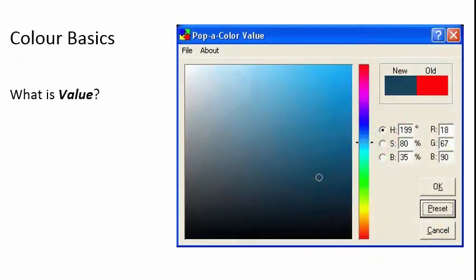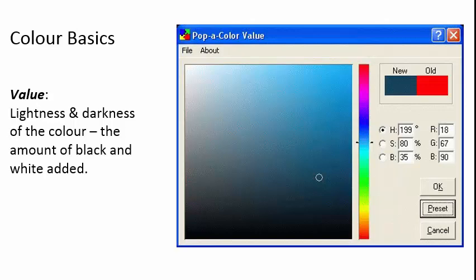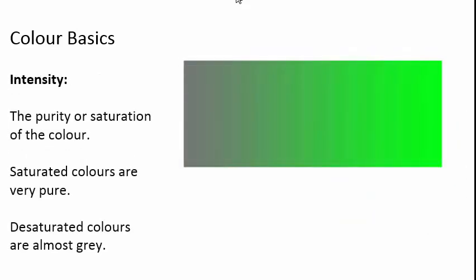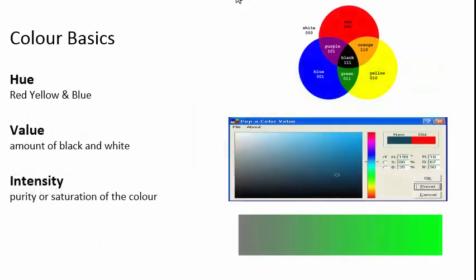Value is about the lightness and darkness of the color — the amount of black and white that we've added to it. Intensity is the purity of the color, or the saturation. Saturated colors are very pure, sort of a very cartoony style. Desaturated colors are almost gray.